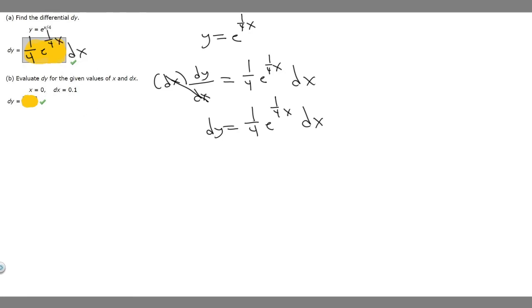So let's do b. So b says to evaluate dy for the given values of x and dx. So x equals 0, dx equals 0.1. So all we've got to do is basically just plug these values into this.